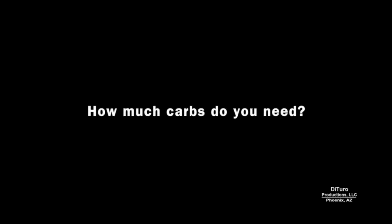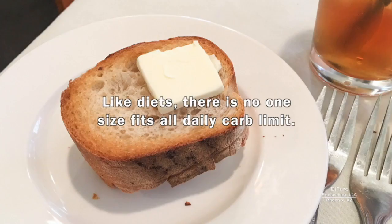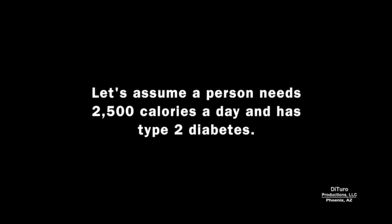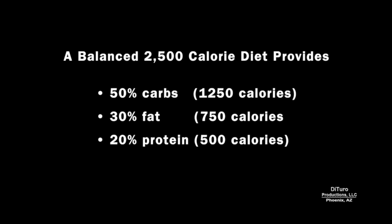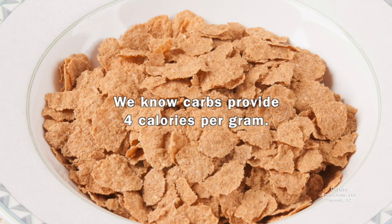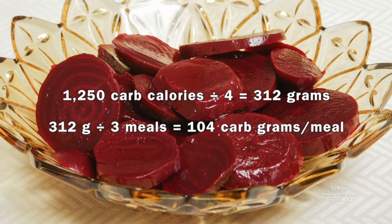How much carbs do you need? There is no one-size-fits-all daily carb limit. Let's assume a person needs 2,500 calories a day and has type 2 diabetes — eating a balanced diet with 50% carb calories, 30% fat, and 20% protein. Since carbs provide 4 calories per gram, 1,250 carb calories equals 312 grams. Divided by 3 meals, that averages 104 carb grams per meal.